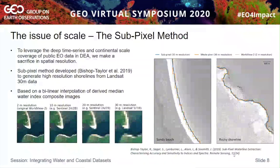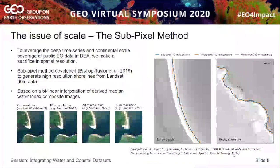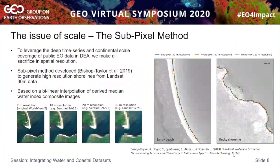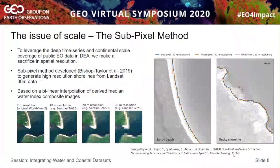Applying this kind of method to a continent the size of Australia raises issues of scale — both temporal, leveraging this time series, and spatial, working at a continental scale across a big country. Using public EO data often means sacrificing spatial resolution. You can see high-resolution data from a private satellite like Worldview and the detail lost when moving to public-good satellites, which sometimes won't be enough to pick up fine-scale coastal changes. So we developed a sub-pixel method able to derive shorelines sub-pixel from Landsat 30-metre data. The orange line shows a shoreline derived from standard pixel-based Landsat; the blue line is our sub-pixel-derived shoreline, which correlates very well with high-resolution reference shorelines.